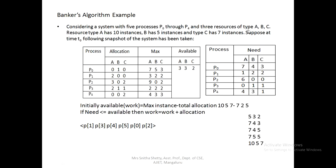The algorithm takes as input the number of resources — here there are three resources A, B, C — and the number of processes — five processes P0 through P4. The maximum instance for each resource is: A = 10, B = 5, C = 7. We then need to read two matrices: the allocation matrix and the maximum matrix.